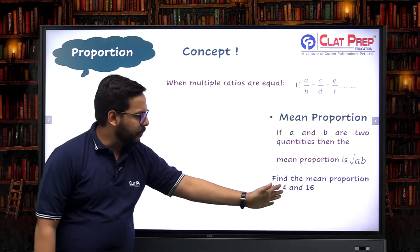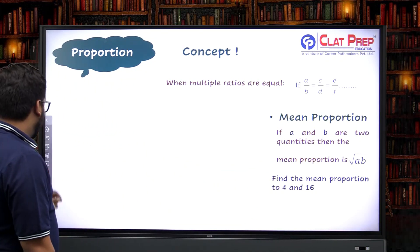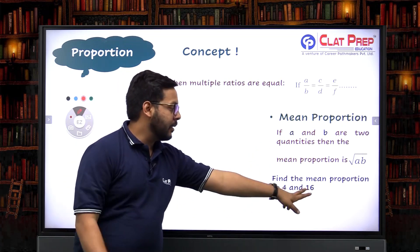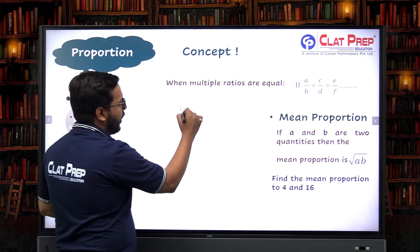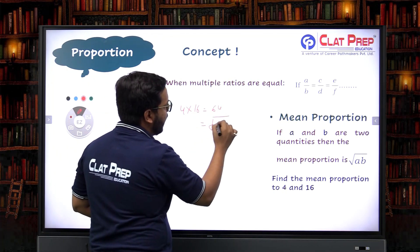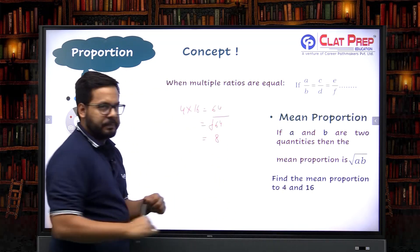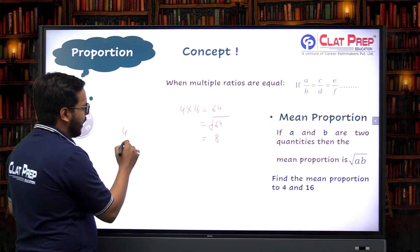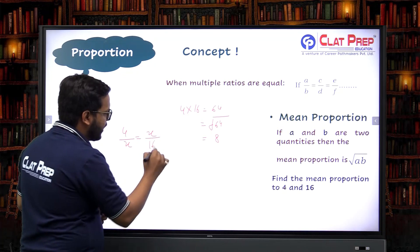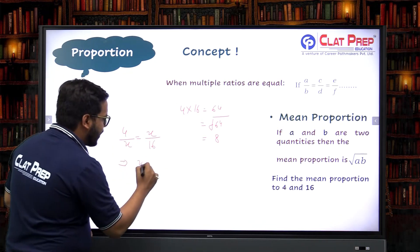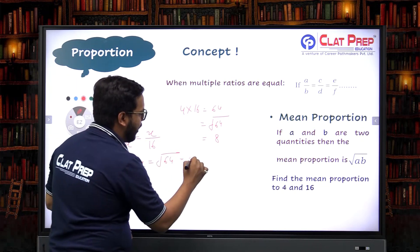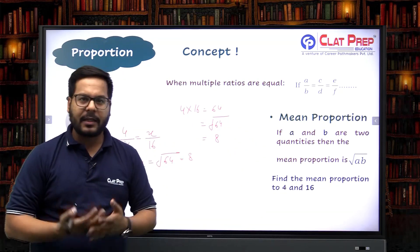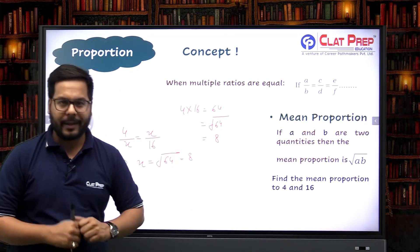For example, find the mean proportion to 4 and 16. Using the formula: √(4 × 16) = √64 = 8. Alternatively, using the concept: 4/x = x/16, so x² = 64 and x = 8. You don't need to memorize the formula — if your basic concept is clear, you can always get the answer quickly. The mean proportion to 4 and 16 is 8.